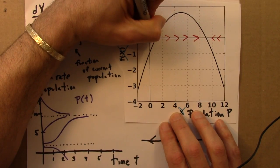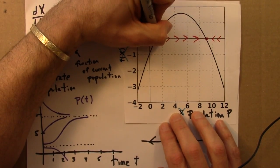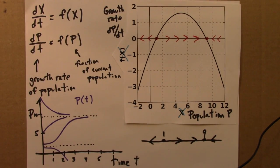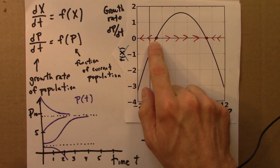And, same story over here. And, we have fixed points at the intersection where the growth rate is 0, the population is fixed.